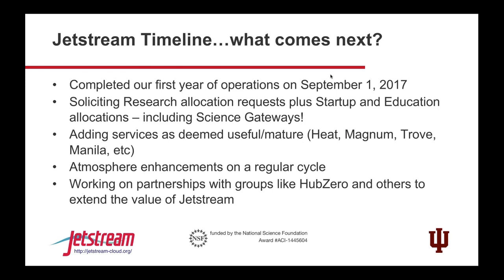What comes next: we went into full production in September of 2017, so we are still working on our first year of operations. We are always soliciting allocation requests via XSEDE, always adding services, and always updating Atmosphere — we basically have a five-week upgrade cycle. Every five weeks we do a maintenance and do bug fixes and add features.